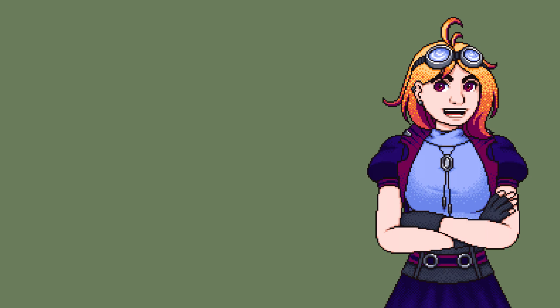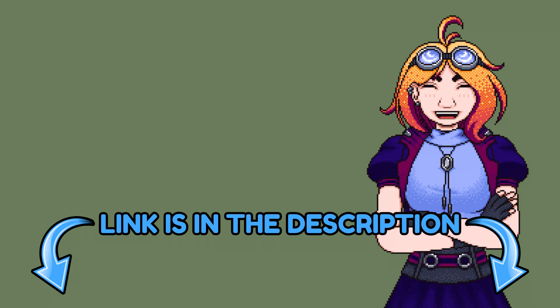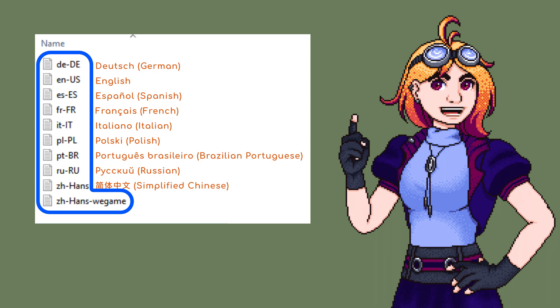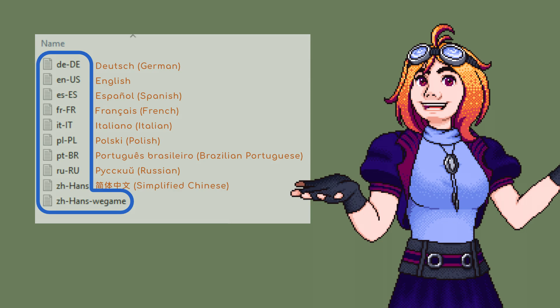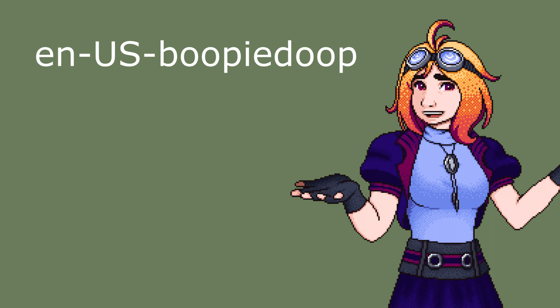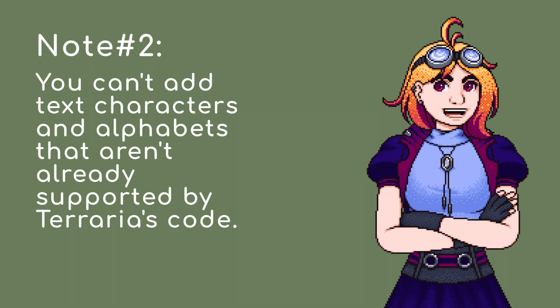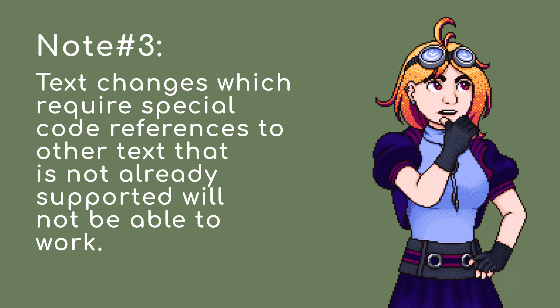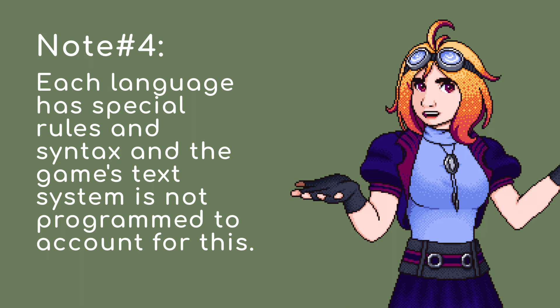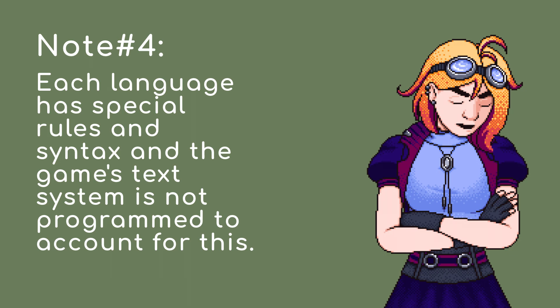For the proper way to name your language packs, you just have to write down the language prefix corresponding to the language and add any name you want — so the name would be something like 'en-us' followed by any name you choose. A couple of things to note: you can't add more languages, only edit existing ones. You can't add text characters or alphabets not already supported by Terraria's code. Text changes that require special code references to unsupported text will not work. Each language has special rules and syntax, so it might be best to replace the language you're most familiar with.